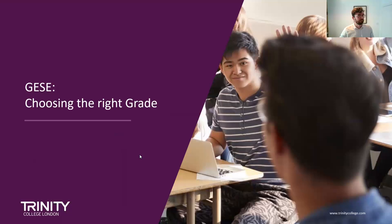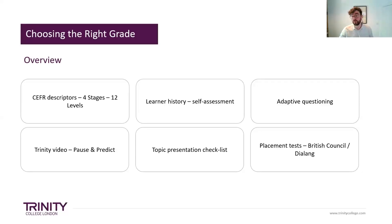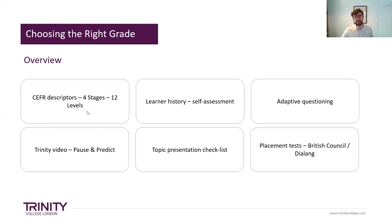Choosing the right grade. First, it's about familiarizing yourself with the level requirements of the Trinity GESE — what are the language requirements? For example, grammar items like present, past, future tenses, and communicative skills such as initiating. Have a look in the exam specifications, the syllabus, the exam information booklet. There's a booklet you can download, and it'll tell you what is required at each level.